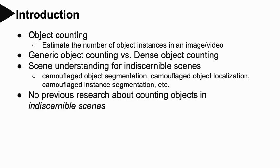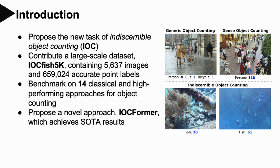In this paper, we systematically study this new problem. The difference between indiscernible object counting and previous counting directions is shown on the right. We contribute a large-scale dataset, IOC Fish 5K, containing more than 5000 images and 600,000 accurate point labels. We also propose a novel approach, IOC Formal, which achieves state-of-the-art results.